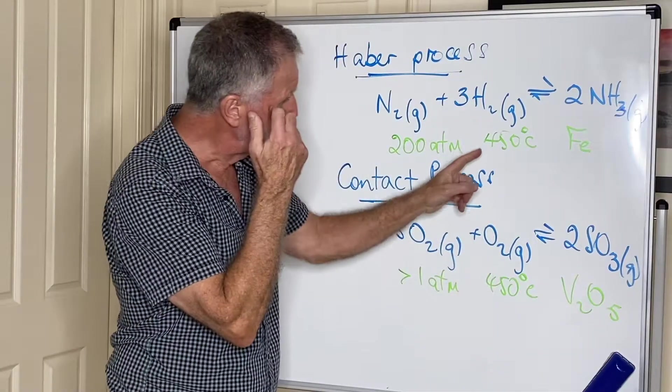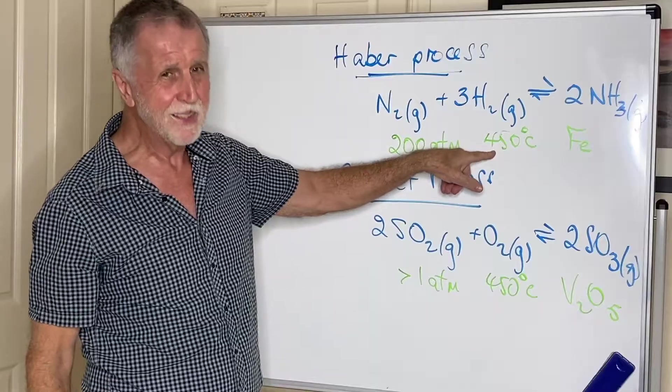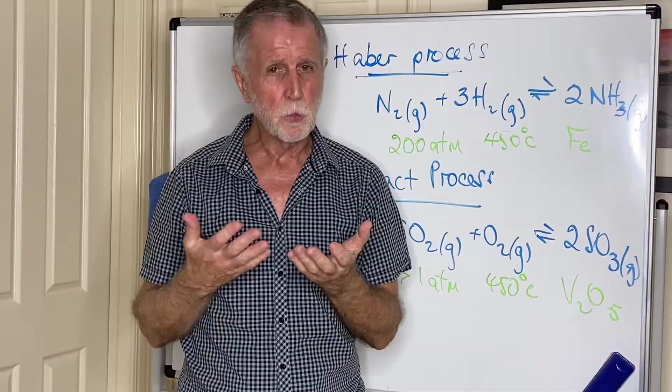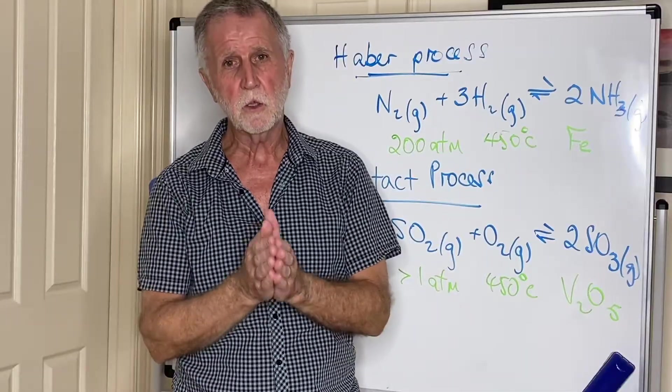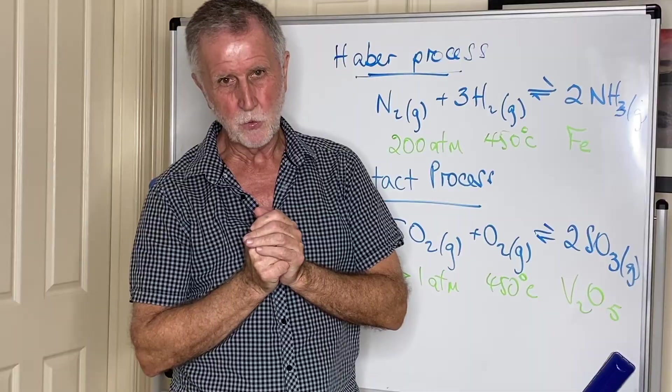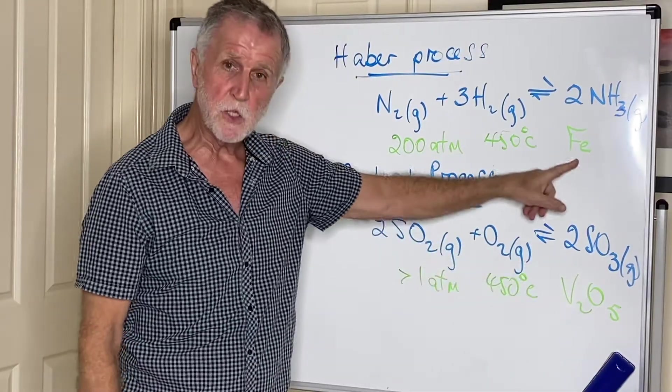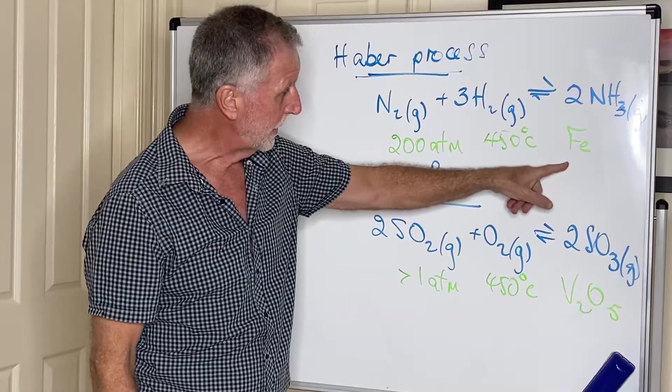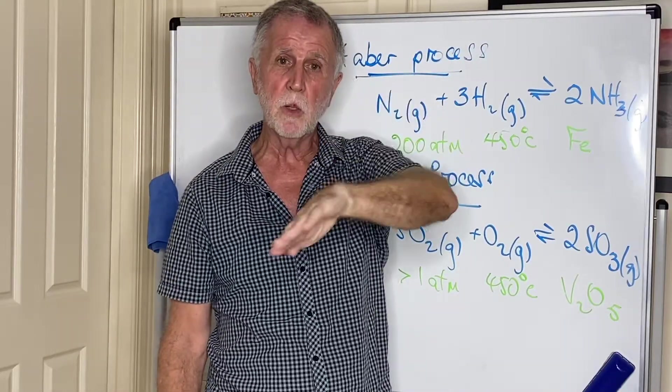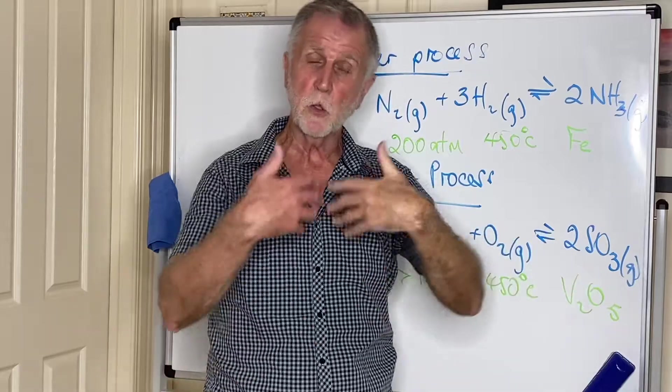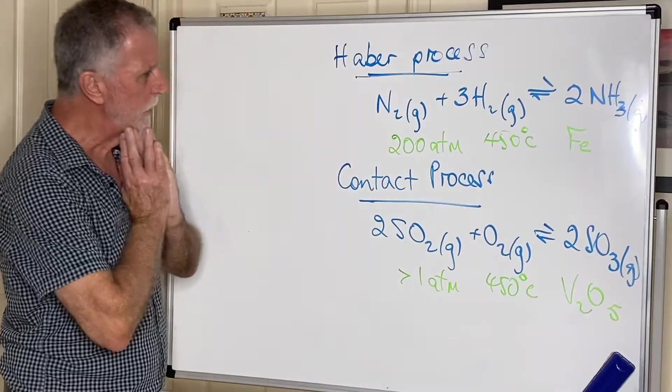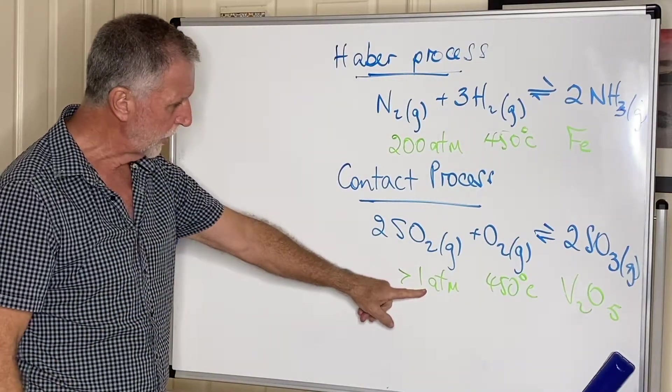However, remember what we said: you can't ignore rate. If you don't use a temperature of at least 450, the rate is so slow that you simply don't produce your product quick enough to sell to your customers. The catalyst will obviously speed it up as well. The catalyst provides an alternative route; it lowers the activation energy barrier, which allows more molecules to get over and speeds up the reaction. The only thing that seems a little bit puzzling is the pressure here.